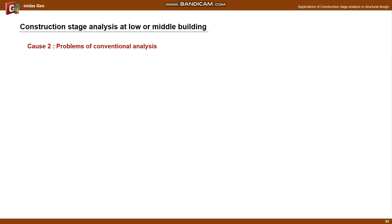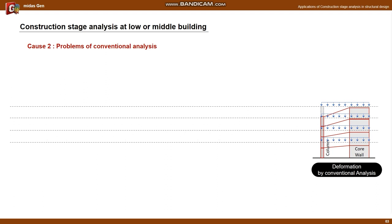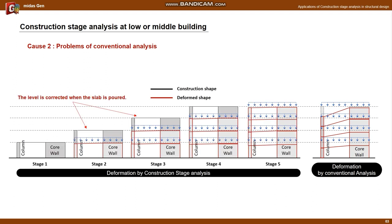The second reason is that there is an error in the conventional analysis for buildings with multiple stories. In the case of conventional analysis, the loads are applied at the same time on all stories. In the case of considering the construction stage, the vertical and horizontal members of each story are constructed according to the planned level, even though deformation occurred in the lower story. So the conventional analysis generates a larger deformation than the construction stage analysis, which generates a larger additional member force.